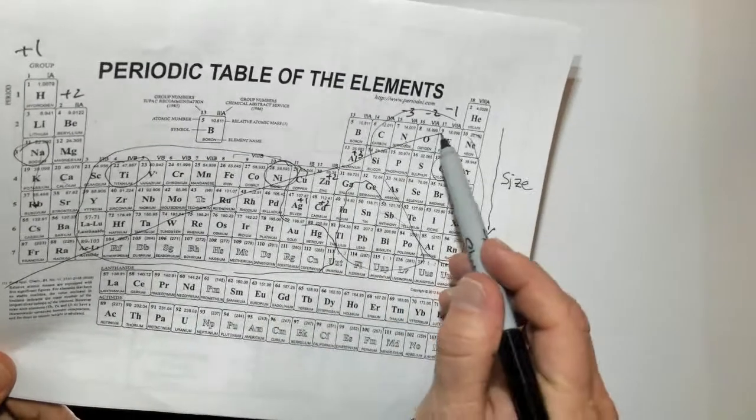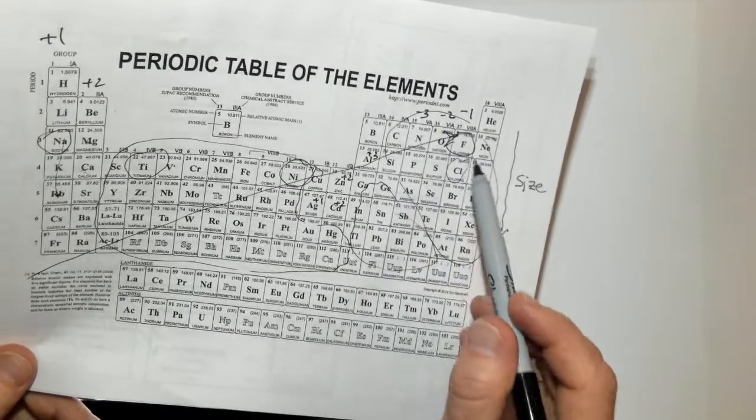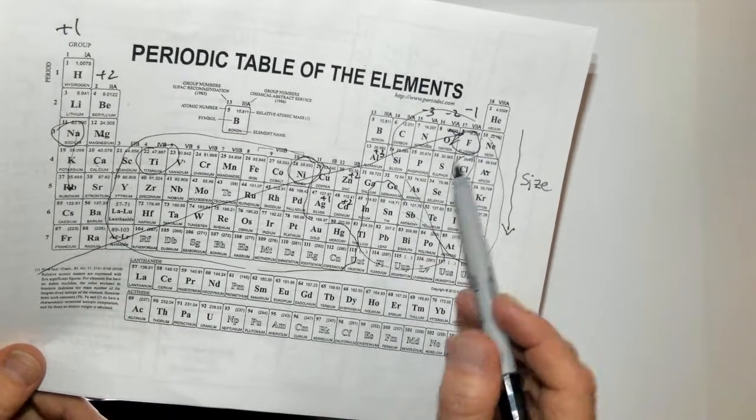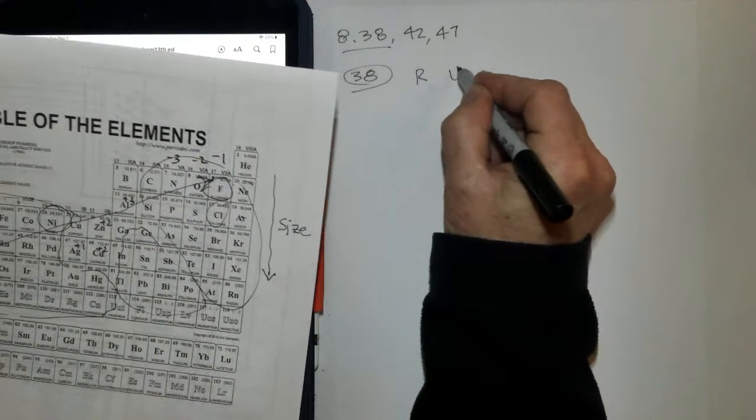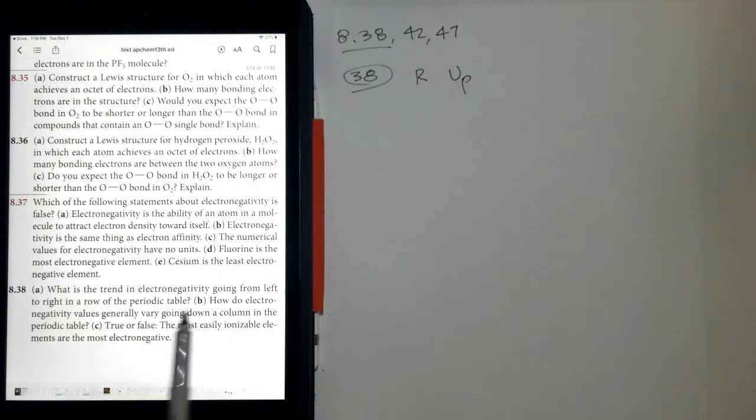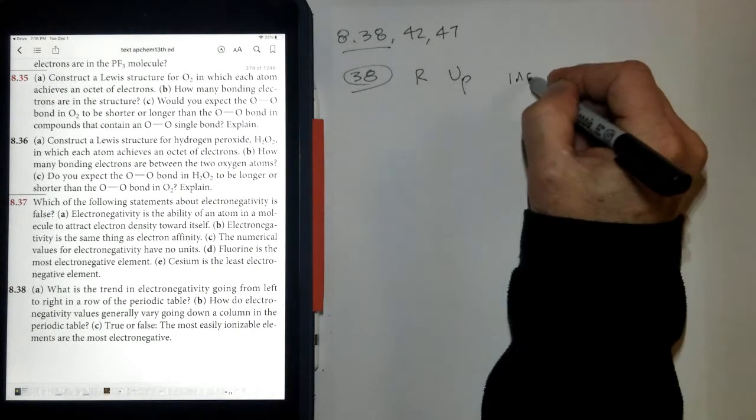Electronegativity increases up and to the right, leading to the most electronegative atom on the periodic table, fluorine. So it increases to the right and increases as you go up. What is the trend going from left to right? It increases.